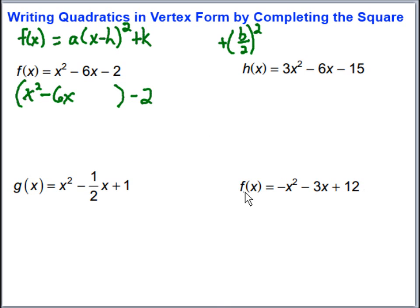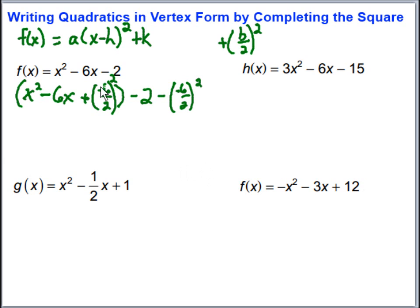I want to add b over 2 squared. My b is negative 6, so I add negative 6 over 2 squared inside the parentheses. Since I added it there, I subtract negative 6 over 2 squared on the outside to undo it. Simplifying: negative 6 divided by 2 is negative 3, and negative 3 squared is 9, so I'm really adding 9 and then subtracting 9, giving minus 2 minus 9 on the outside.